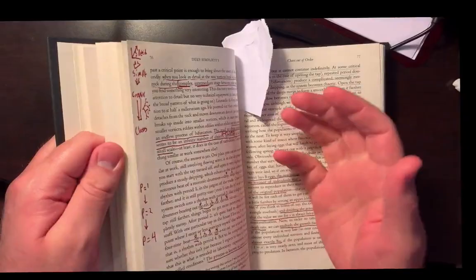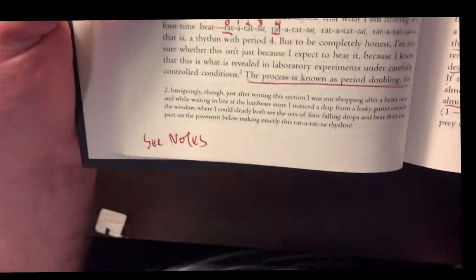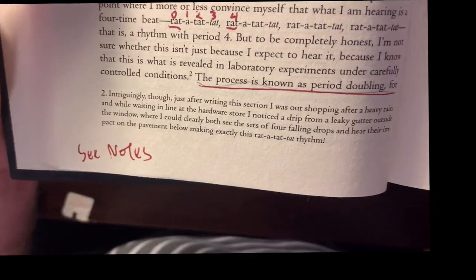So the beginning of the Veritasium video, let me look through this stuff here. He talks about the dripping of a tap. And John Gribben himself talks about the dripping of a tap, on page 76 of Deep Simplicity.